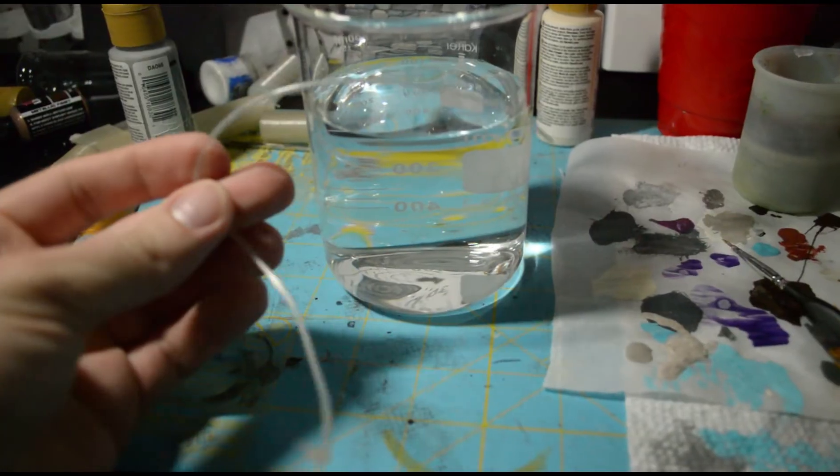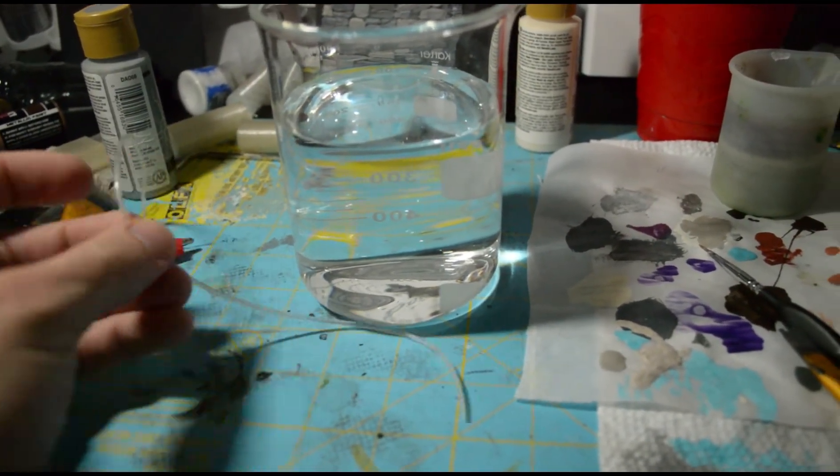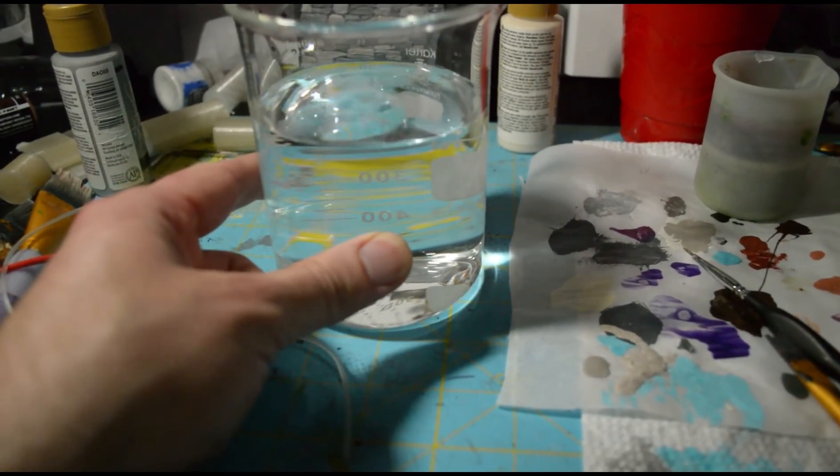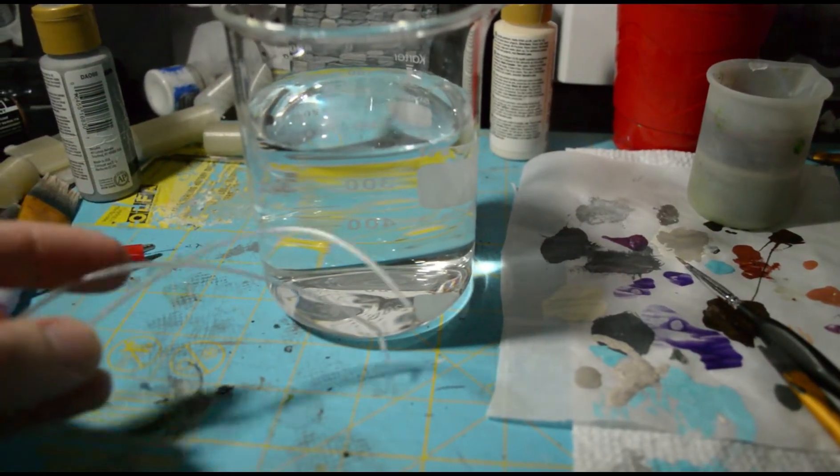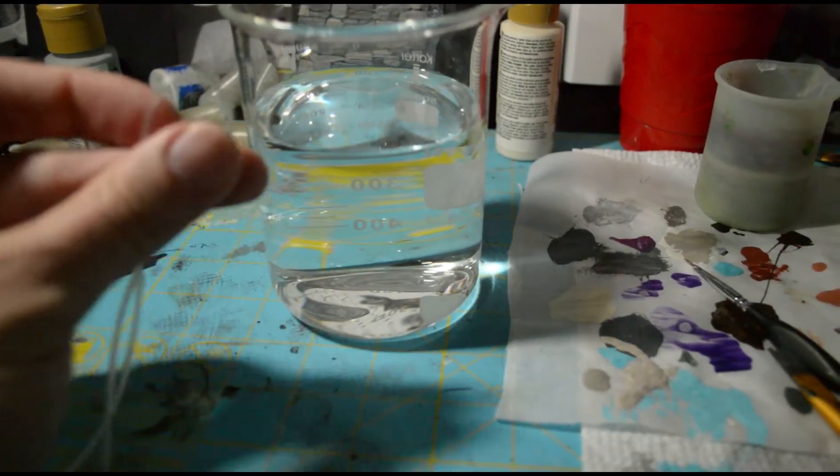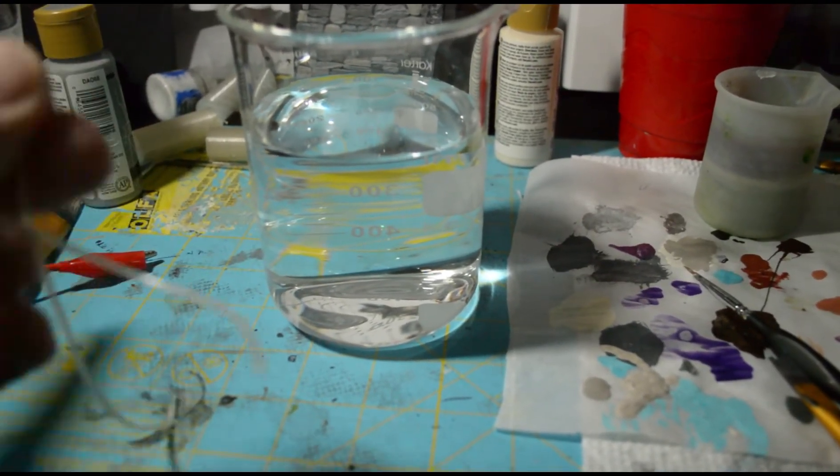All right, so this is the setup here. I've got about a foot of the TimePlast light filament cut, and I've got this very nice scientific beaker filled with tap water at room temperature. I'm going to put the filament in the water and then put a time-lapse camera on it, and we're going to come back in about 24 hours and see how it looks. So I will dunk this in. We'll watch the time-lapse and take a look.